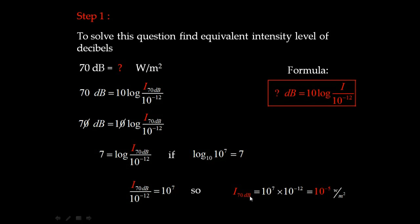Now, following the similar process for 80 decibel, after simplification, we find the intensity of 80 decibel is 10 to the power of minus 4 watt per meter square. You can check this in detail.